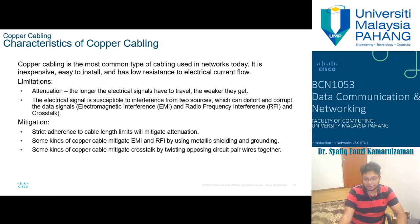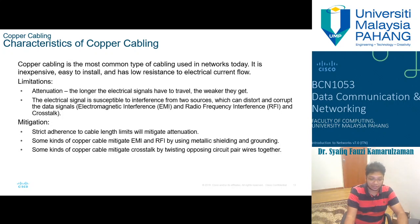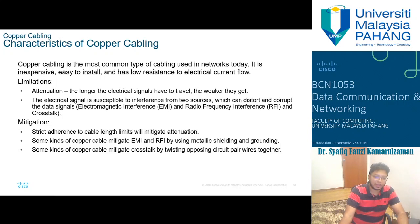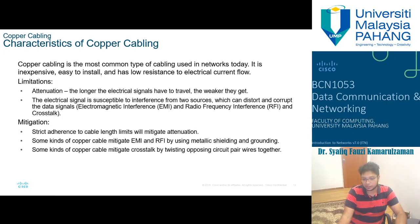The electrical signal is susceptible to interference from two sources which can distort and corrupt data signals: EMI (electromagnetic interference) and RFI (radio frequency interference), and also crosstalk where multiple cables are connected close to each other. To mitigate these problems, we have strict cable length limits for attenuation, copper cables use shielding and grounding to mitigate EMI and RFI, and some copper cables mitigate crosstalk by twisting opposing circuit pair wires together.